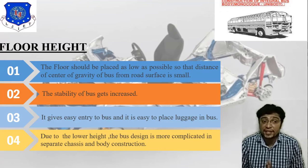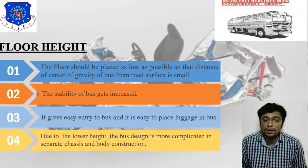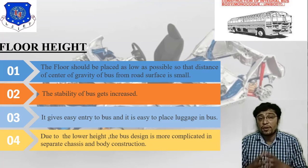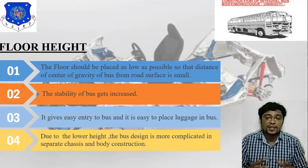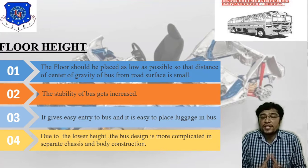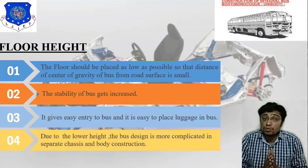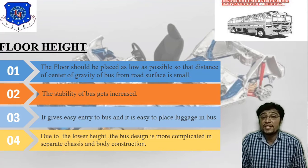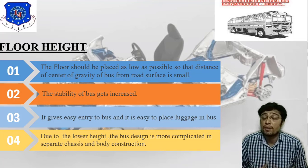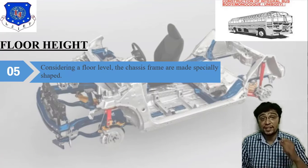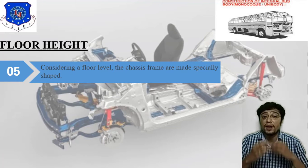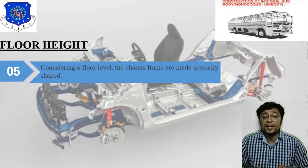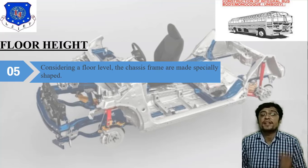Fourth point: due to the lower floor height, as you can see in the image, the bus design is more complicated in separate chassis and body construction. Our target is to develop a design that improves vehicle performance. Due to the lower height, the bus design is more complicated in separate chassis and body construction. Considering the floor level, the chassis frames are made specially safe, and according to application we can use any section or shape.